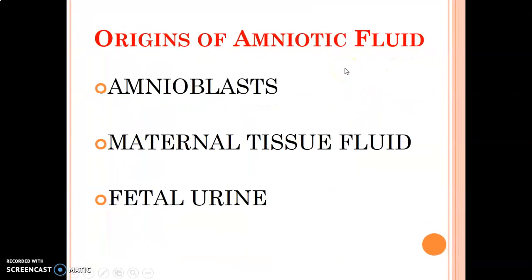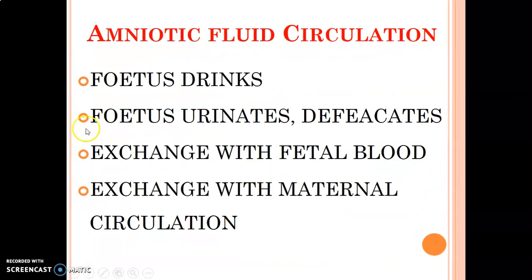Amniotic fluid has three sources: the cells lining the amniotic cavity (the amnioblasts) produce the fluid, it comes from maternal tissue fluid, and from fetal urine — the fetus urinates and contributes to the amniotic fluid. To keep this fluid in circulation, the fetus drinks the amniotic fluid, urinates and defecates inside the amniotic cavity, and there is exchange with fetal blood and maternal circulation.